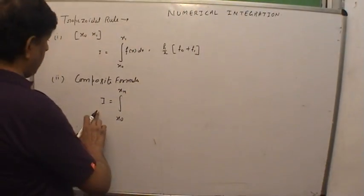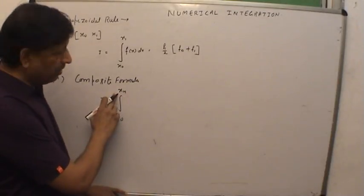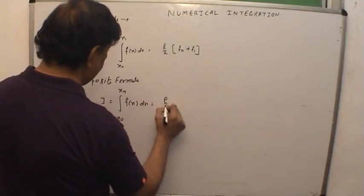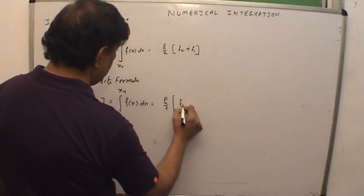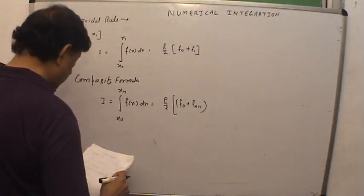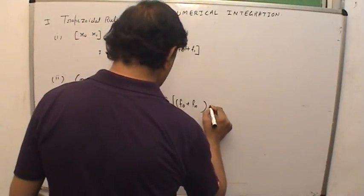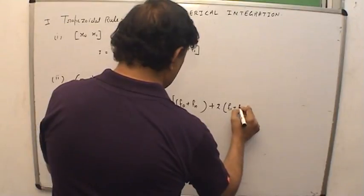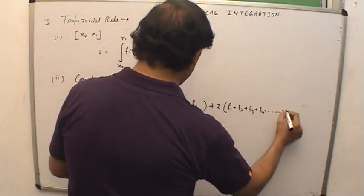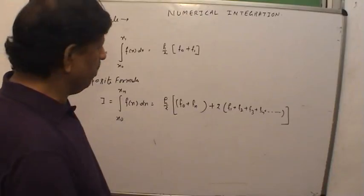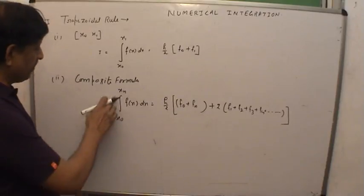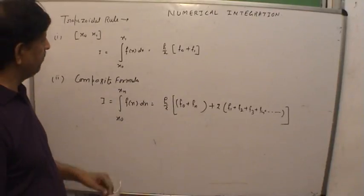The composite formula, where the limit is from x0 to xn, gives the integral of f(x) dx as h/2 times [f0 plus fn plus 2 times (f1 plus f2 plus f3 plus f4 plus so on)]. The simple formula applies for two conjunctive points, and the composite applies when the limit variation is more than conjunctive values.